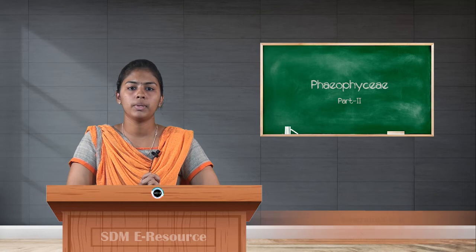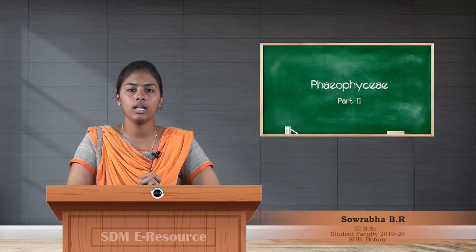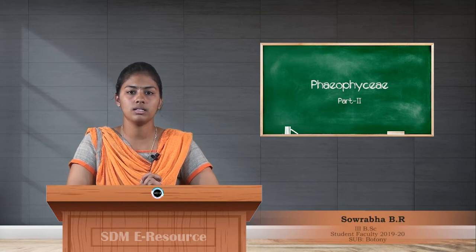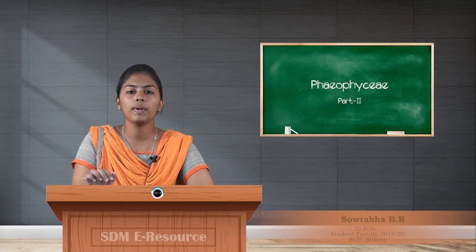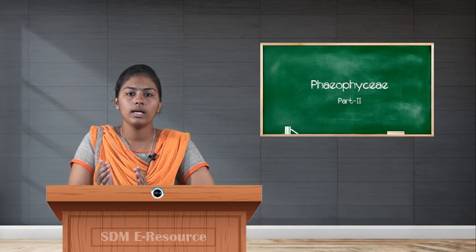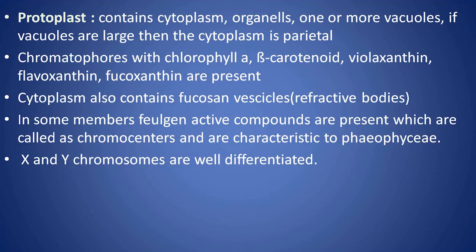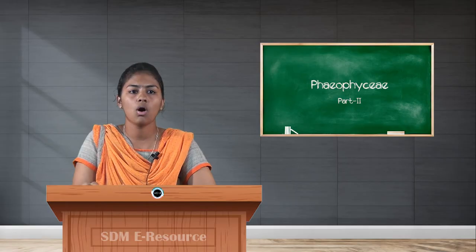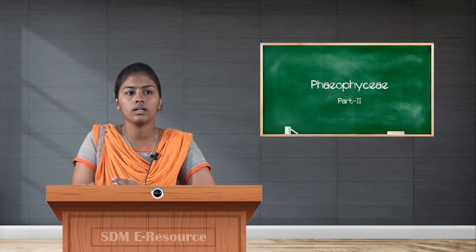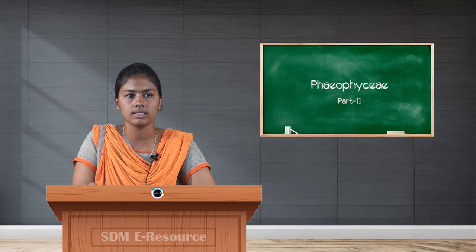Welcome all. Today we will be discussing the remaining parts of the class Phaeophyceae, that is the brown algae. Coming to the inside of the cell, the protoplast — everything except the cell wall — is composed of various organelles and consists of chromatophores like violaxanthin, fucoxanthin, flavoxanthin, beta-carotenoid, and other chlorophyll pigments.